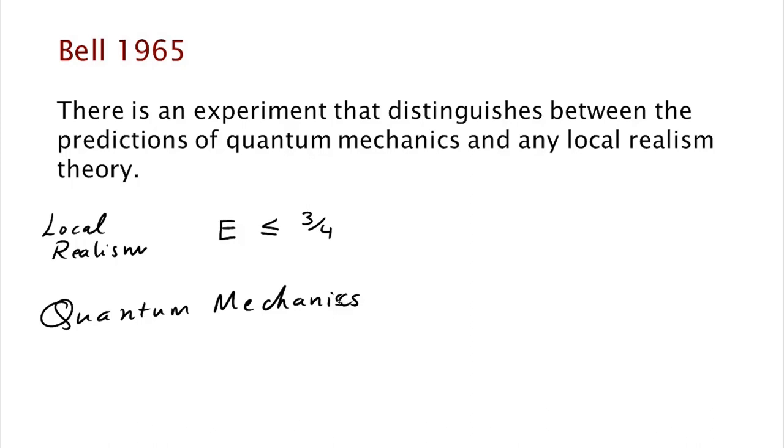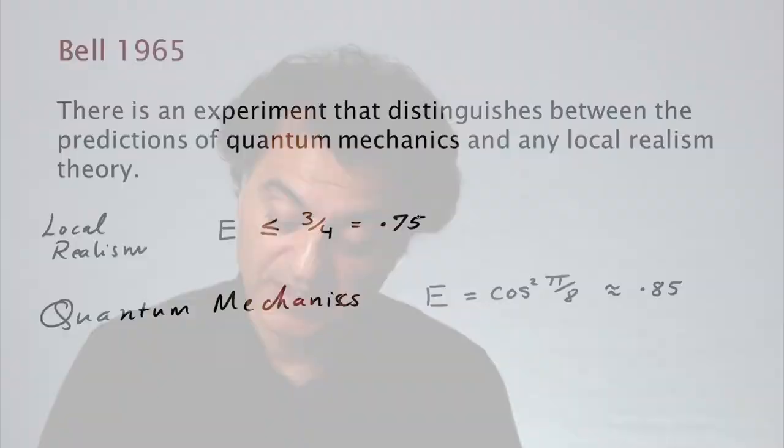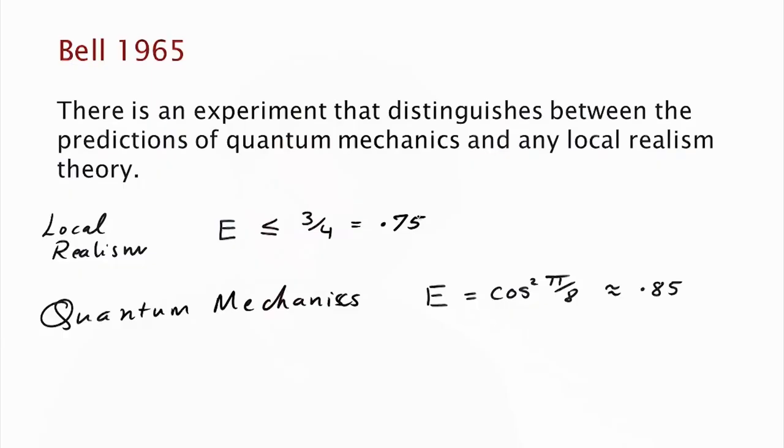On the other hand, if nature is governed by quantum mechanics, then E should be cosine squared π/8, which is about 0.85. So what this said is that what EPR gave was a thought experiment—it was not an experiment you could actually perform to tell the difference between quantum mechanics and local realism. Thirty years later, Bell was able to actually give an experiment that could distinguish between the two. This experiment has since been performed and repeated many times to increasing degrees of accuracy, and the results have always been consistent with quantum mechanics.